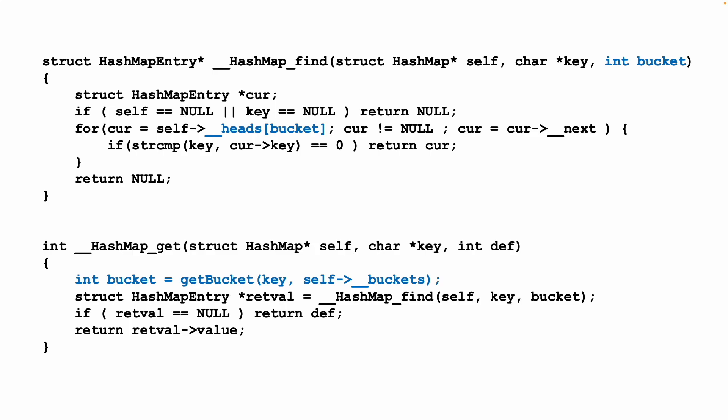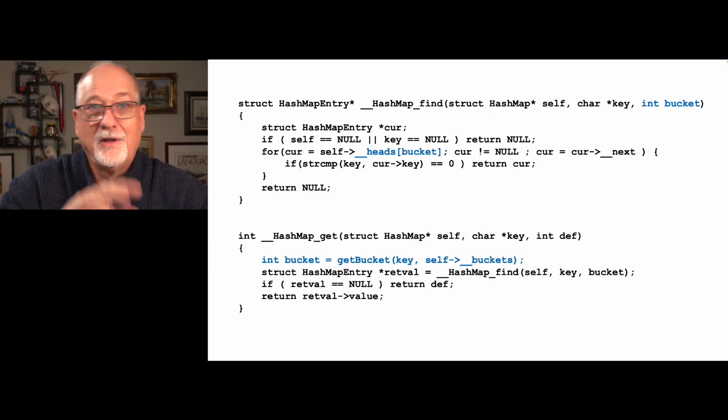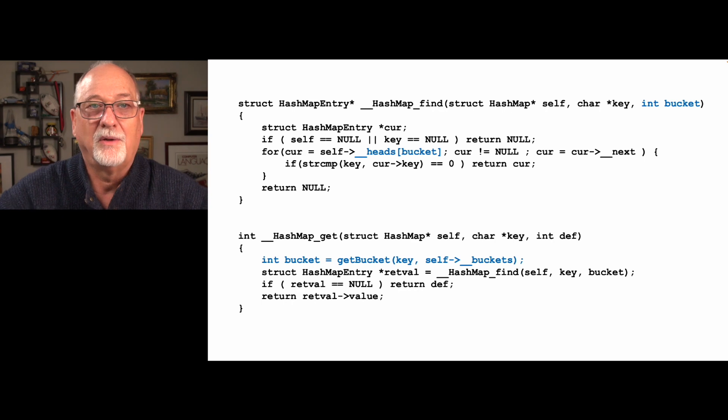We've been using ListMapFind before, and all it does is find a HashMap entry if it's already there. We send in the whole HashMap self — which is the Python object-oriented pattern where the first parameter is always self — we have a key we're looking up, and then we're telling it to start in a particular bucket. That's the real change. HashListFind doesn't have a bucket; HashMapFind has a bucket. This code is exactly the same as HashListFind, except instead of starting at head, we have an array of heads, and we use bucket to figure out the thing. Then we loop through it — we're in the right bucket.